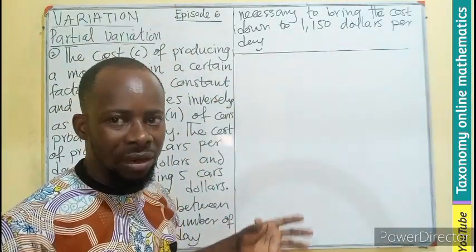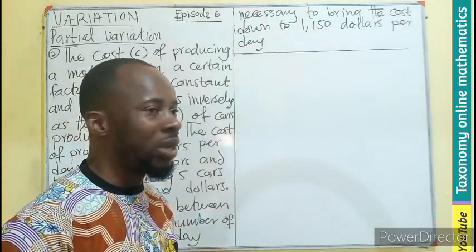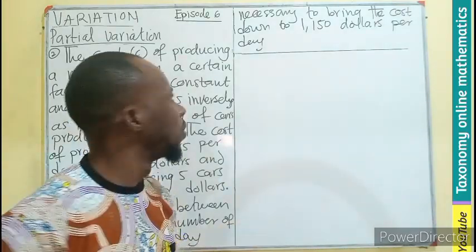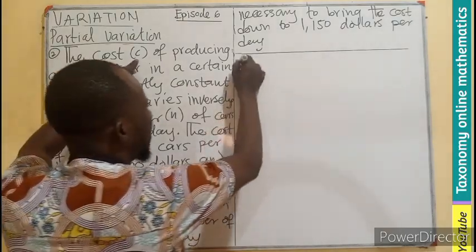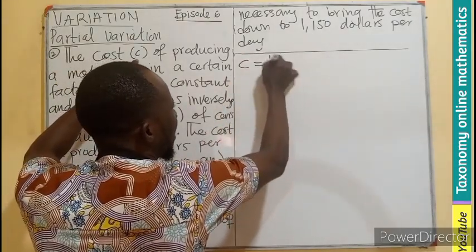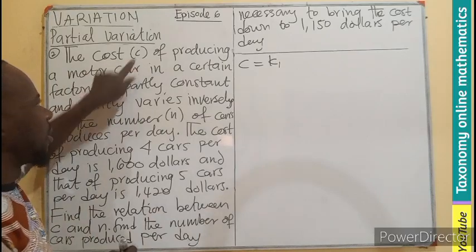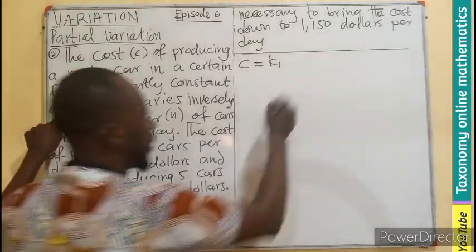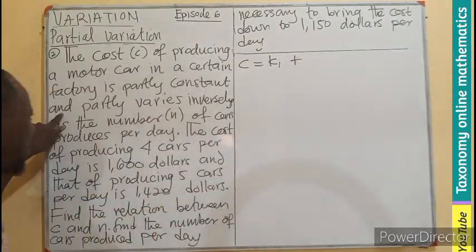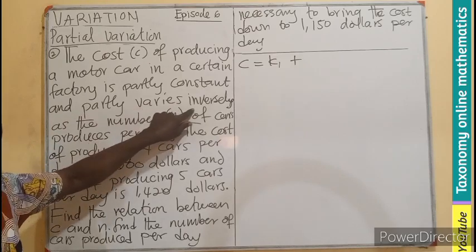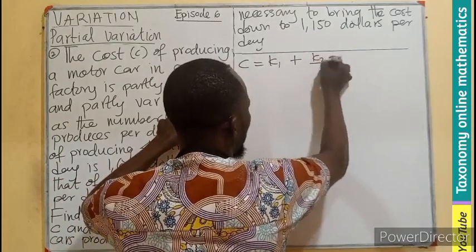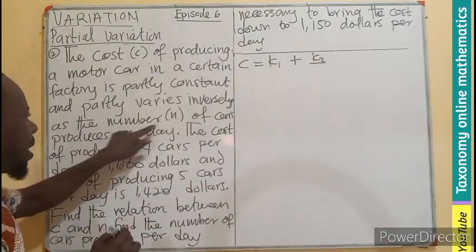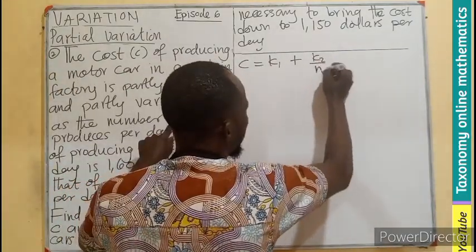Under partial variation, we are interested in two constants. If I'm going to write a relation equation, it means C is partly a constant, then the N here is an addition of the next variation. Partly varies inversely, so inverse variation is going to be K2 over the number of cars produced.